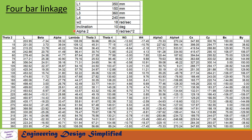After deriving all the necessary equations, let us solve a problem using Microsoft Excel. In this problem: L1 equals 350 mm, L2 equals 150 mm, L3 equals 360 mm, L4 equals 240 mm, omega 2 equals 18 radians per second, inclination is 10 degrees, and alpha (crank angular acceleration) is 0 radians per second squared. Theta 2 varies from 0 to 360 degrees at 15-degree intervals, and subsequent columns calculate L, beta, alpha, lambda, theta 3, theta 4, omega 3, omega 4, alpha 3, alpha 4, Cx, Cy, Bx, and By.